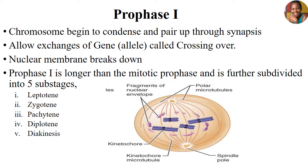Prophase I is generally the stage in meiosis I where chromosomes begin to condense and pair up through a process we call synapsis. The synapsis process allows exchange of genetic materials or genetic segments that we call alleles, and after successful exchange of these materials we call this crossing over. In Prophase I, the nuclear membrane also breaks down and exposes our homologous chromosomes, which will later be separated to the different poles.